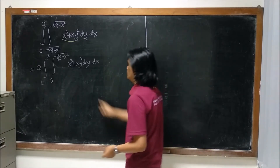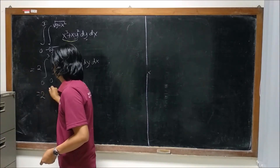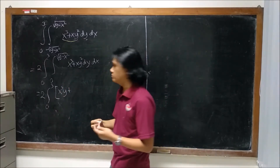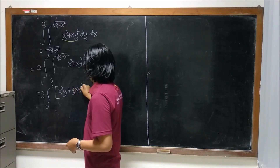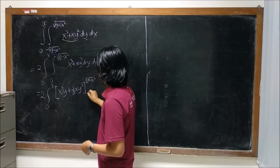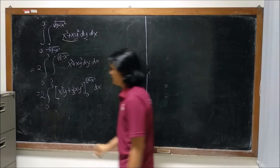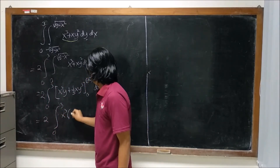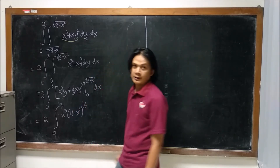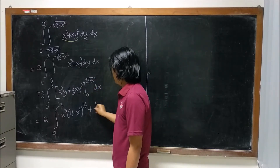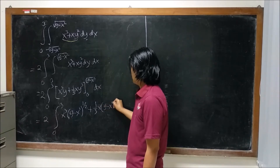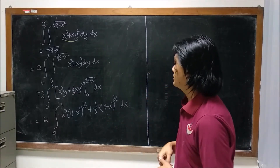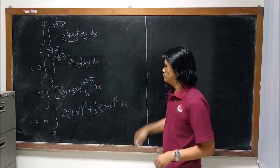Let us compute the integral with respect to y. The integral of x cubed is x cubed y, and the integral of x y squared is one-third of x y cubed. We evaluate it from 0 to square root of 9 minus x squared. So we end up with the integral from 0 to 3 of x cubed times (9 minus x squared) to the power of one-half, plus one-third of x times (9 minus x squared) to the power of 3/2, dx. This is the integral that blackpen and redpen didn't finish, leaving it to us as viewers to compute.